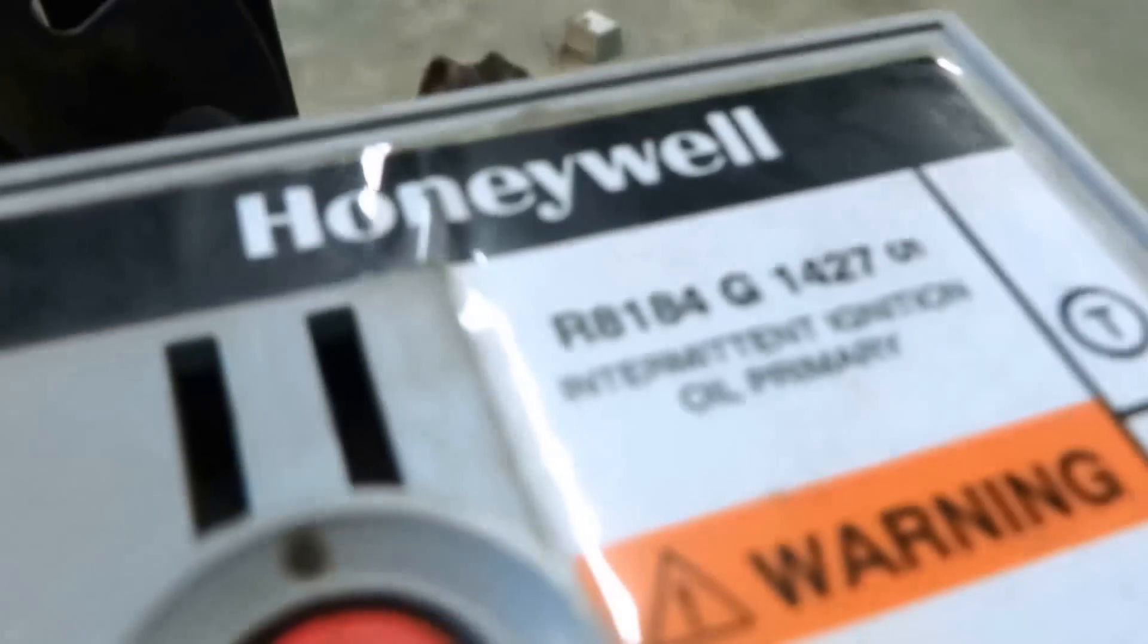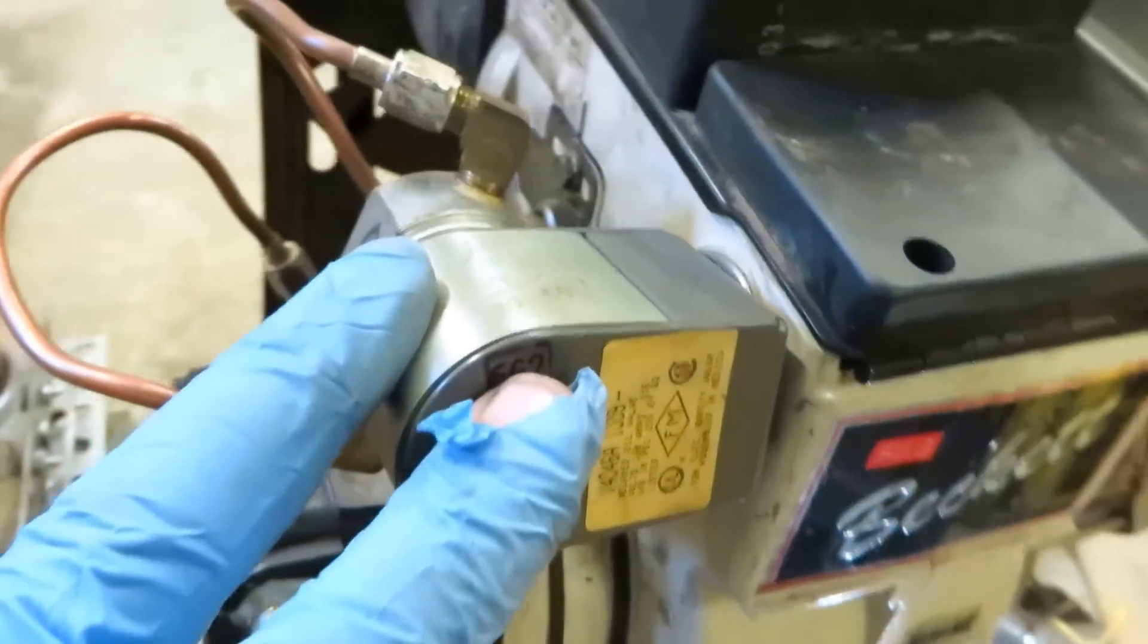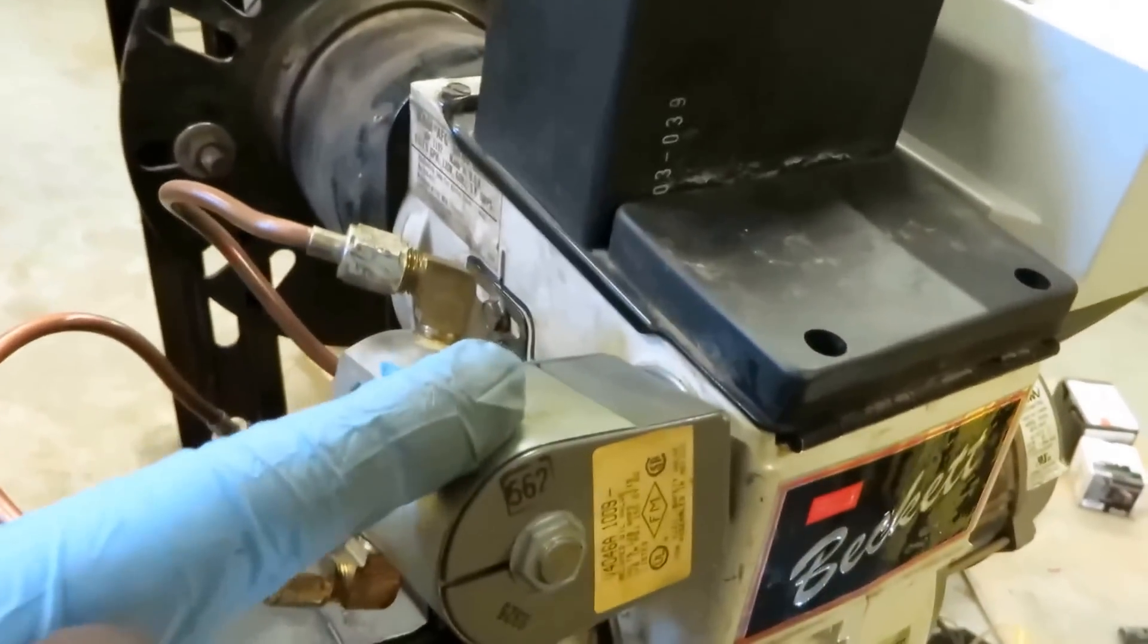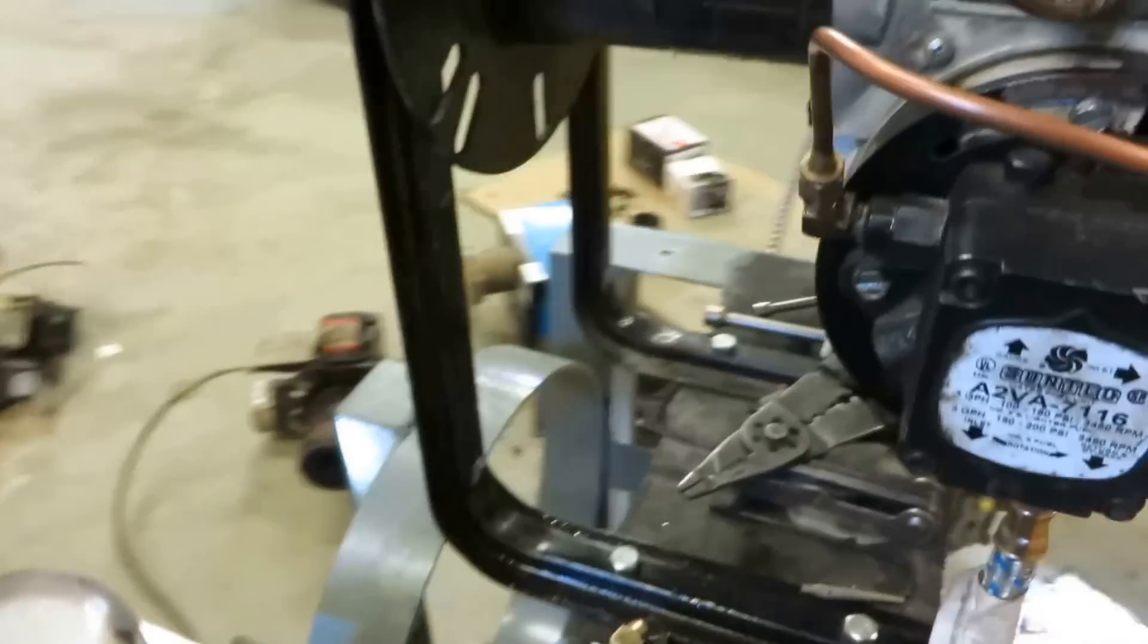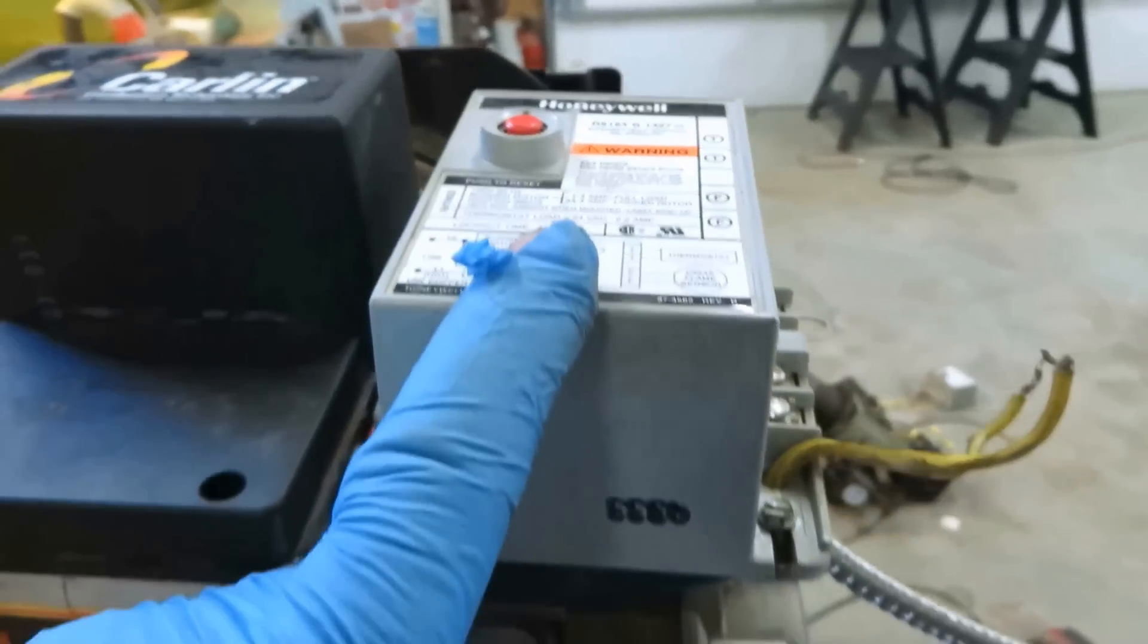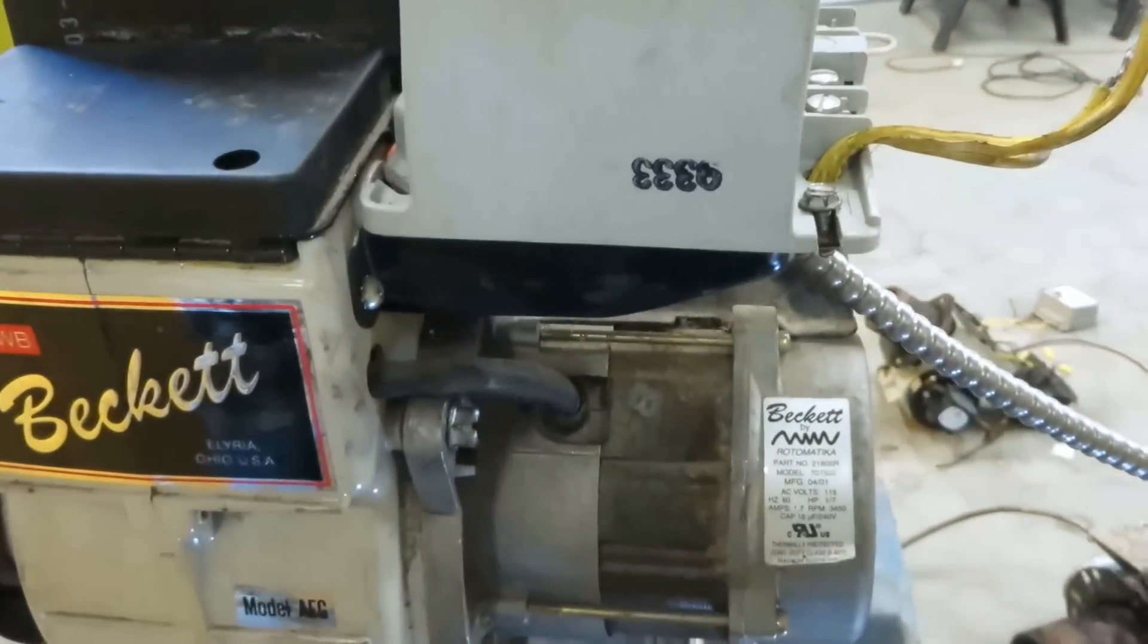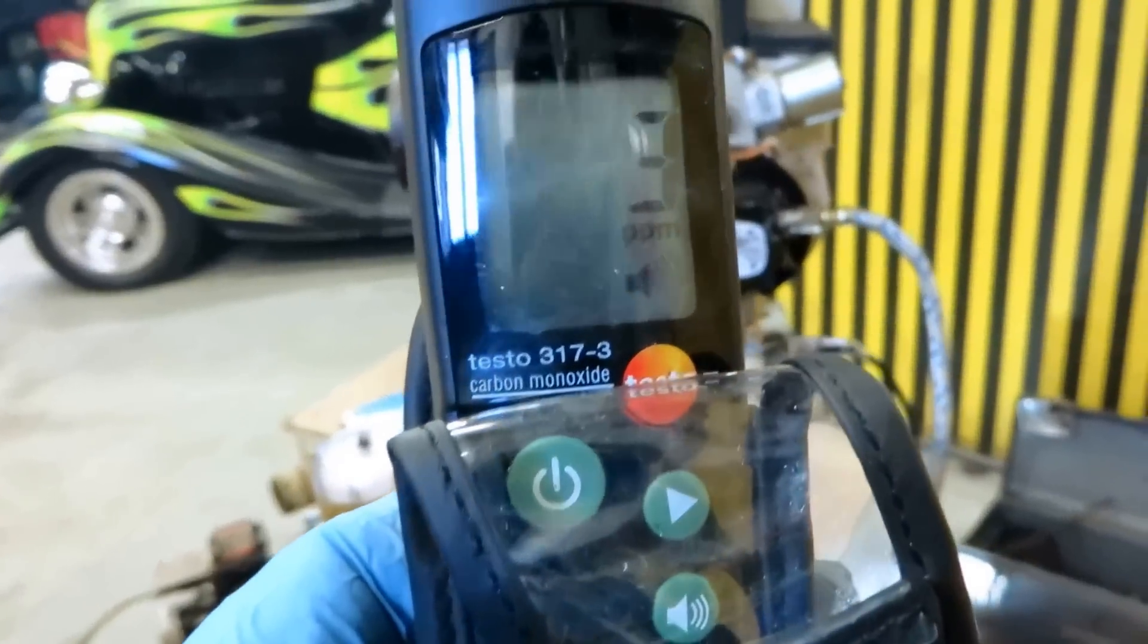All right guys, I got my regular 8184G hooked up to the delayed oil valve. So it will fire up and there will be a delay on the oil valve. It's got a built in delay on this anyway before it fires. Just won't have a post-purge with this type of control. Just checking my environment here with my carbon monoxide detector. Three parts per million.